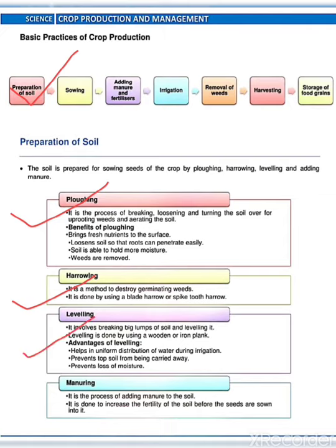Then after leveling. It involves breaking big lumps of soil and leveling it. Leveling is done by using wooden or iron planks. Advantages of leveling: it helps uniform distribution of water during irrigation, it also prevents top soil from being carried away and prevents loss of moisture. Then after manuring — it is the process of adding manure to the soil to increase the fertility of the soil before the seeds are sown into it.